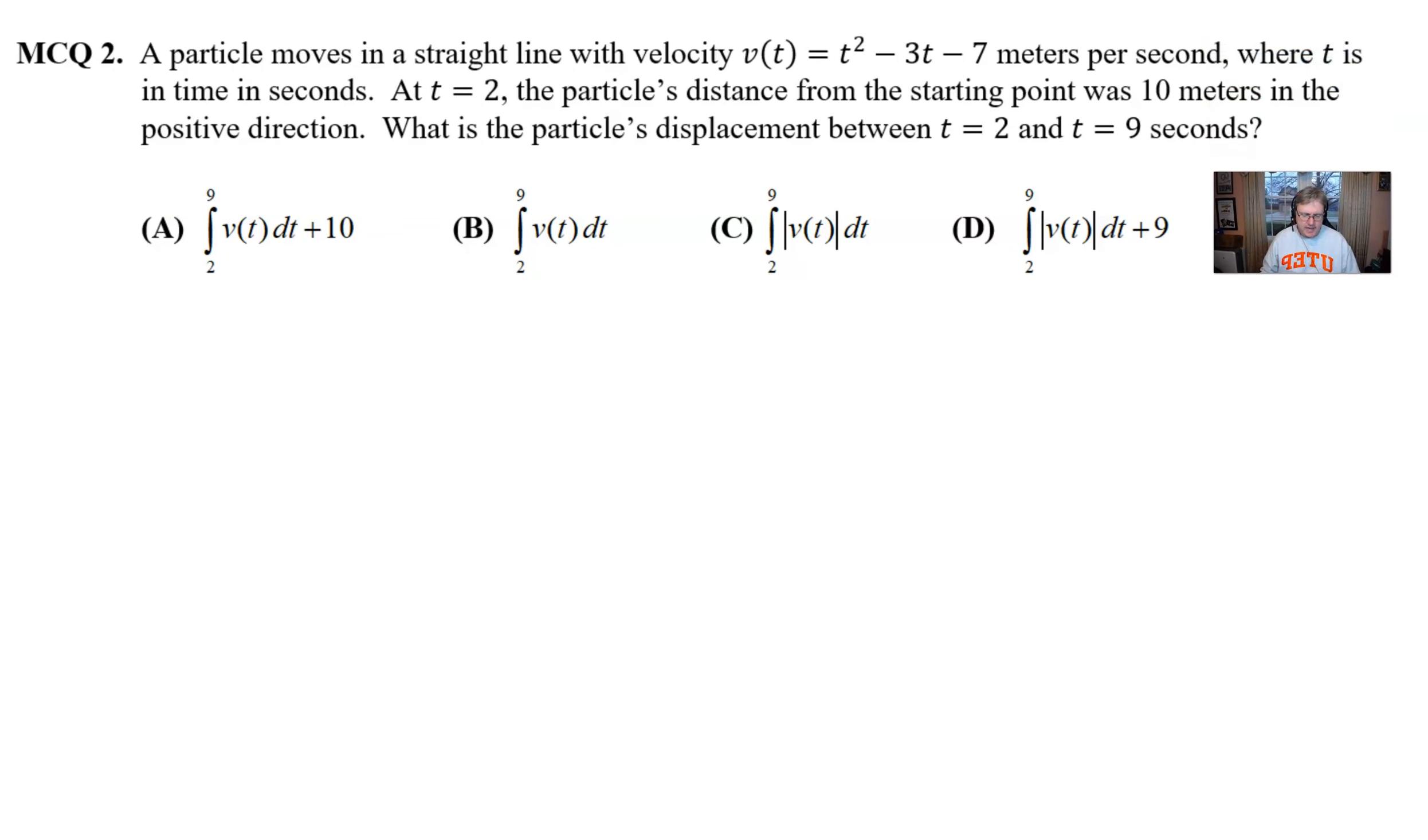Move myself out of the way. Take a look at the question up here. It says a particle moves in a straight line with velocity v of t equal t squared minus 3t minus 7 meters per second, where t is in time in seconds. At time t equal 2, the particle's distance from the starting point was 10 meters in the positive direction. What is the particle's displacement between time 2 and time 9?